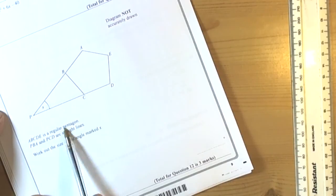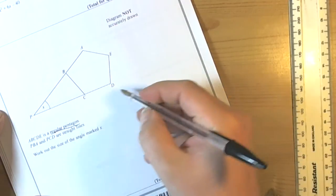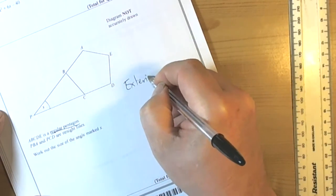So let's have a look. ABC is a regular pentagon. Well, as soon as we see that word pentagon and regular, it's about polygons, so we should be recognizing there are two formulas that are quite useful here.